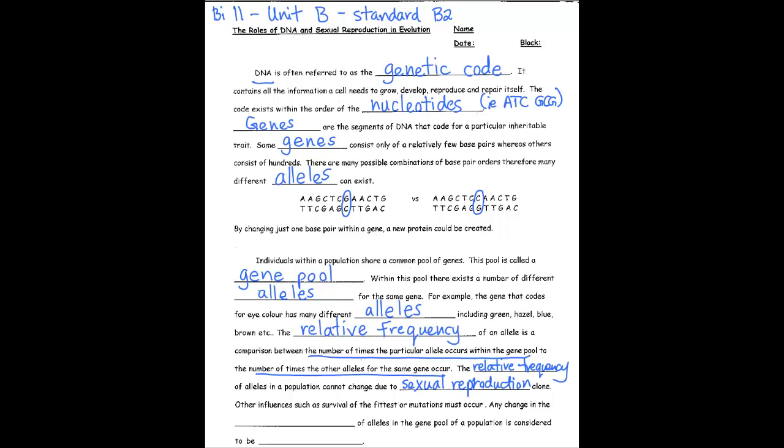The relative frequency of alleles in a population cannot change due to sexual reproduction alone. Other influences such as the survival of the fittest or mutations must occur. Any change in the relative frequency of alleles in the gene pool of a population is considered to be evolution.